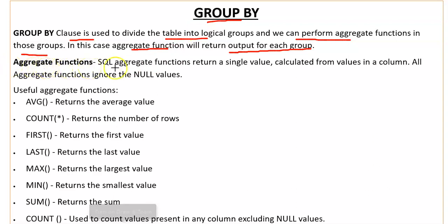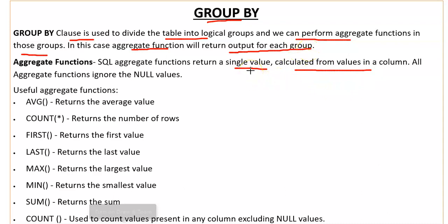Let's see what the aggregate functions are. SQL aggregate functions return a single value calculated from values in a column. Aggregate functions work on multiple values and provide a single output. All aggregate functions ignore null values — wherever there are null values, the aggregate function does not count them.